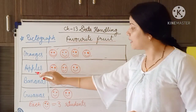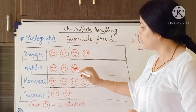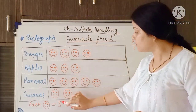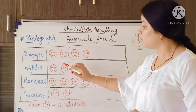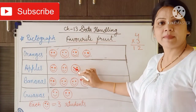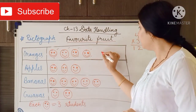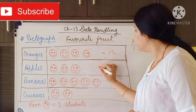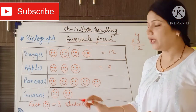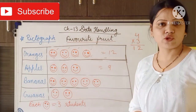Similarly, for apples — how many students like apples? Here three smileys are there, and each smiley means three students. So we multiply three by three and we get nine. Apples are liked by nine students.